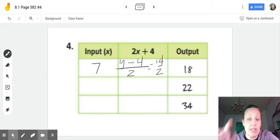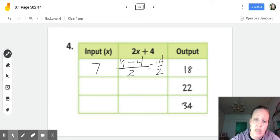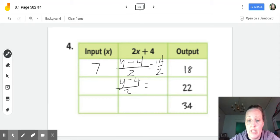Now if you put that back in, you can see that'll work. Seven times two is 14, plus four is 18. So again, we're going to plug in our output, minus four, divided by two. And 22 minus four is 18, divided by two. 18 divided by two is nine.